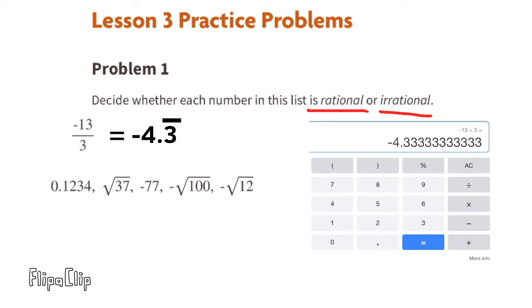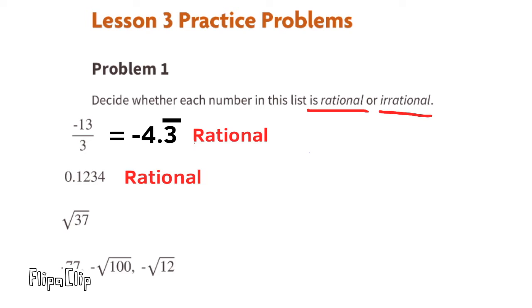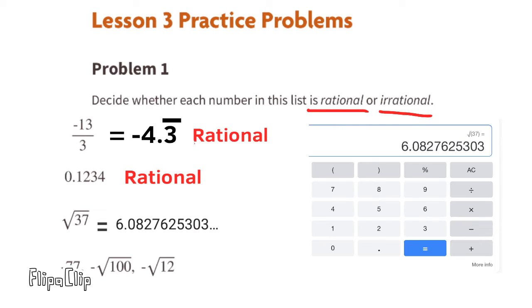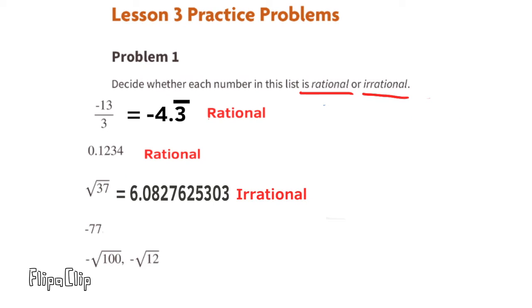So negative 13 divided by 3 is rational. 0.1234 can be written as a fraction, so it is rational. The square root of 37, since the square root of 37 never ends and does not repeat, it is considered an irrational number.